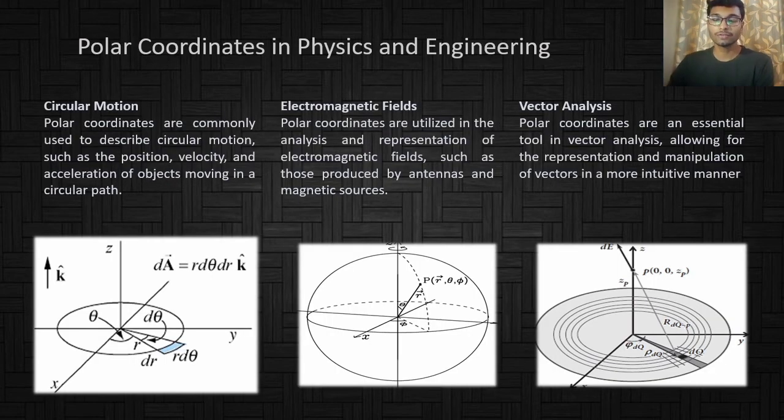The first application of polar coordinates is in the field of physics and engineering. In engineering, polar coordinates are used to describe circular motion, such as the position, velocity, and acceleration of objects moving in a circular path.